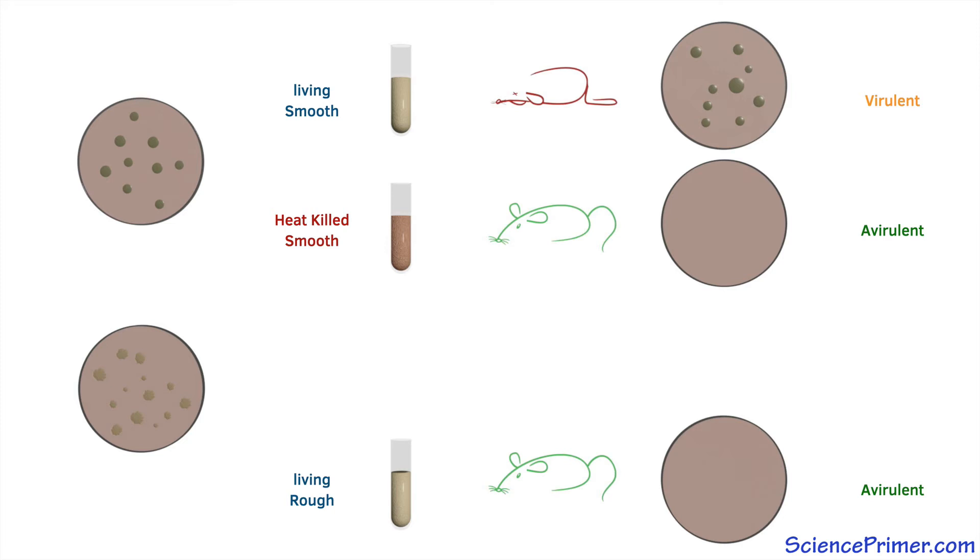But in order for them to be useful, there has to be no chance of the material reverting to a disease-causing state. To further understand the stability of these non-disease-causing conditions, Griffith mixed the living avirulent cultures with the heat-killed virulent strain to see how combining them affected mice.